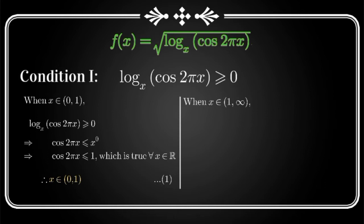Now our second case is waiting for us. So now let's go to the second case. It says when x belongs to 1 to infinity. Now what shall happen in this case? So first of all we will write our original condition that is log cos 2πx to the base x shall be greater than or equal to 0. Now let's take antilog. So it becomes cos 2πx shall be greater than or equal to x raised to 0. Now here the inequality didn't change because our base is greater than 1. Now this can be written as cos 2πx is greater than or equal to 1.